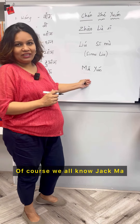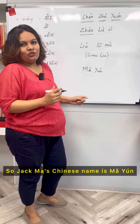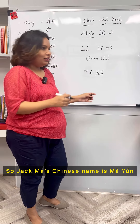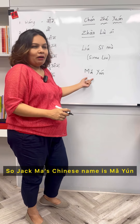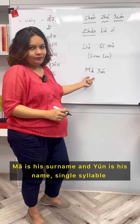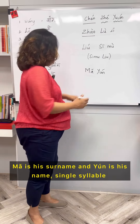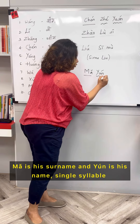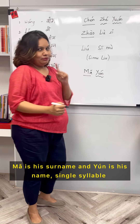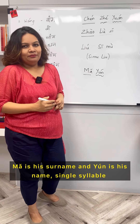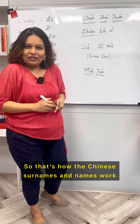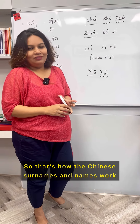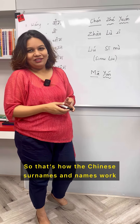Of course, we all know Jack Ma. Jack Ma's Chinese name is Ma Yun — Ma is his surname and Yun is his given name, a single syllable. So that's how Chinese surnames and names work.